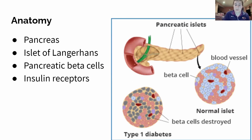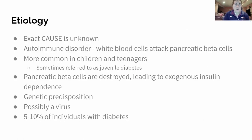That is how insulin works and why it's important, because if not, your blood sugar is just going to spike up. That's the anatomy we're looking at with type 1 diabetes. The exact cause is completely unknown — they're thinking it might be something along the lines of a virus that could cause it.